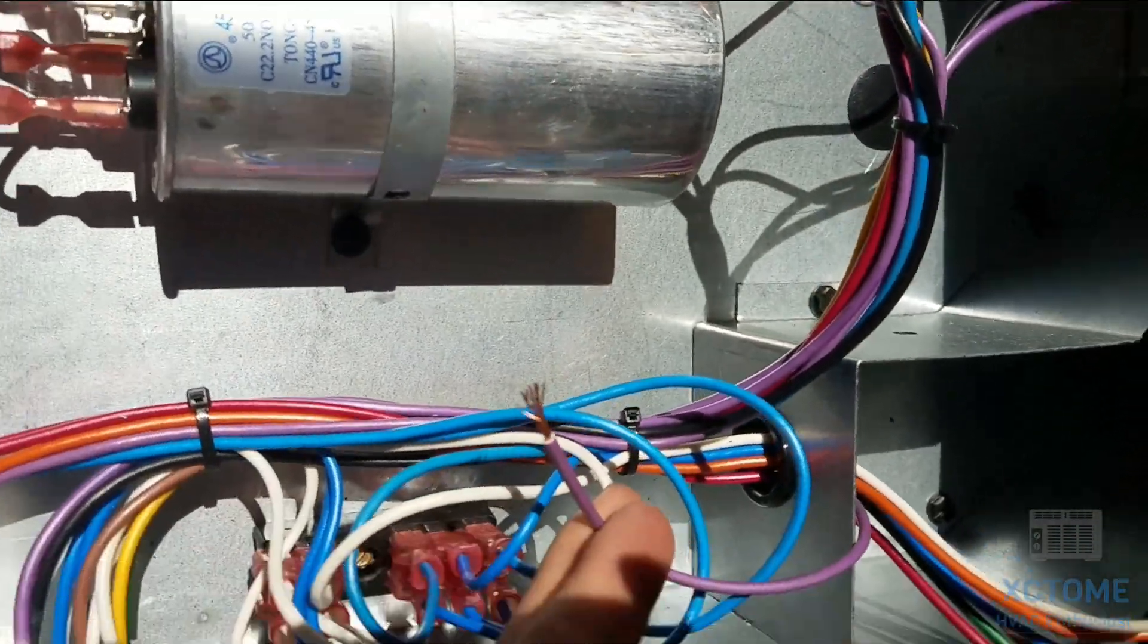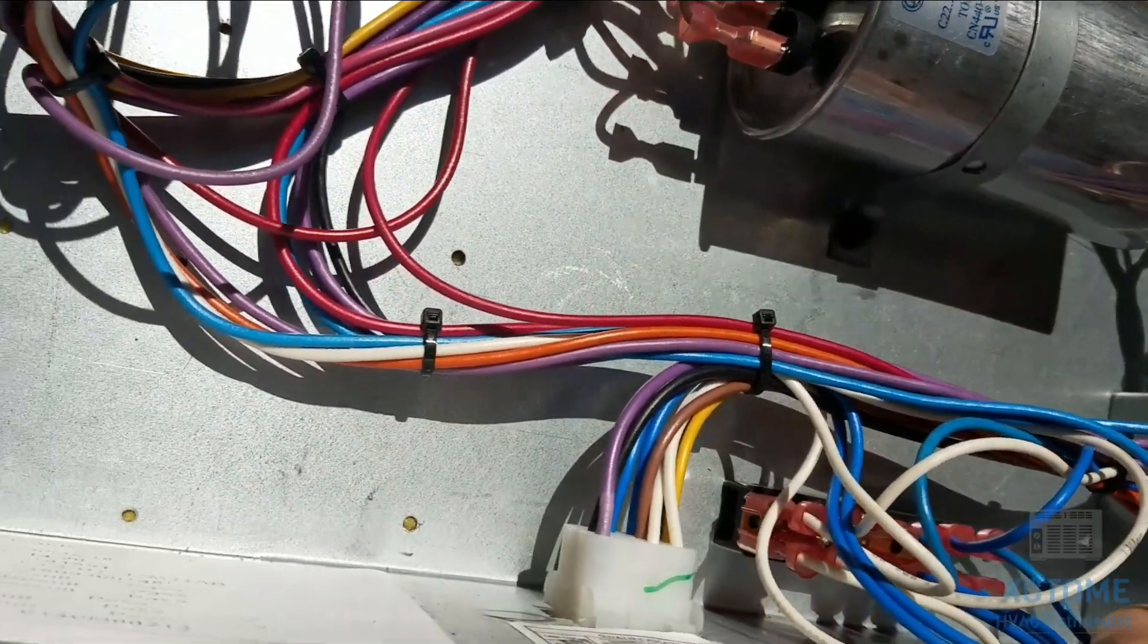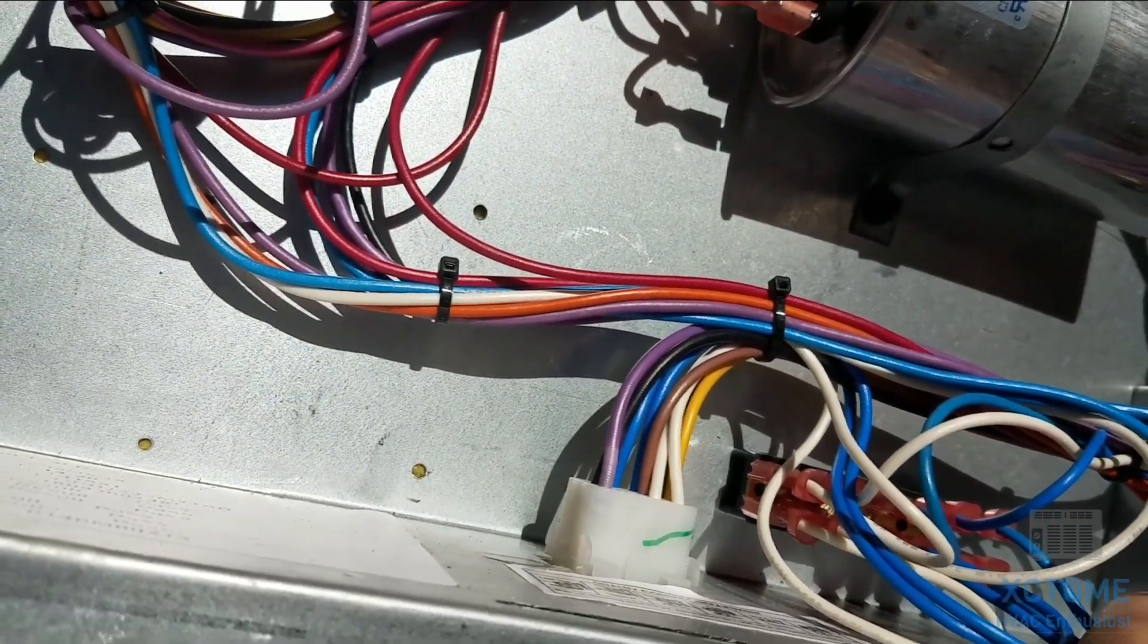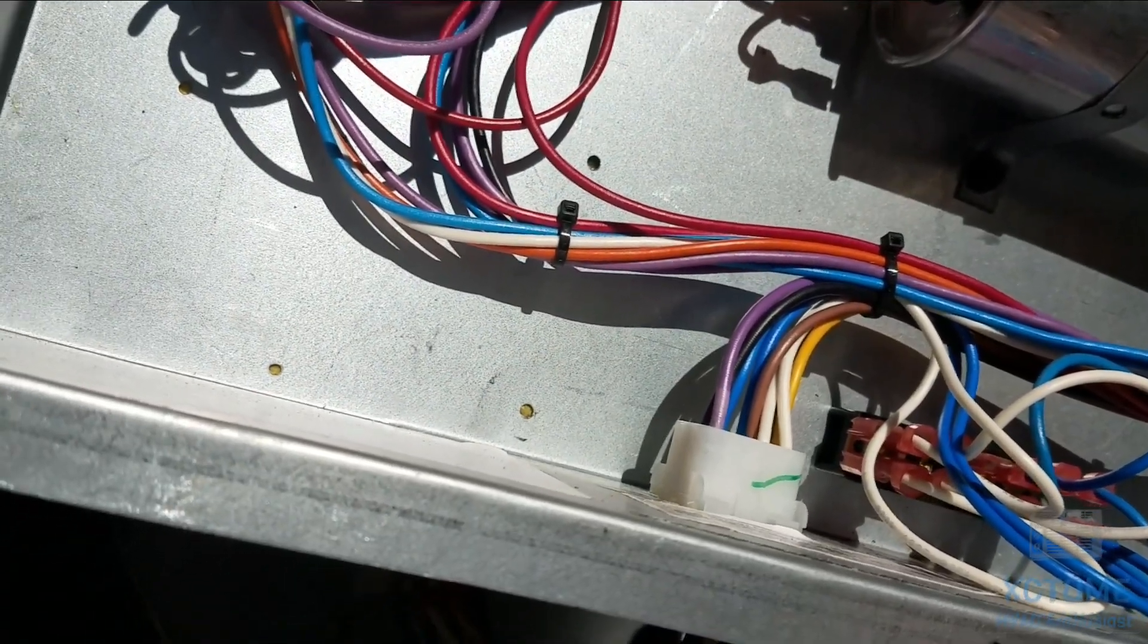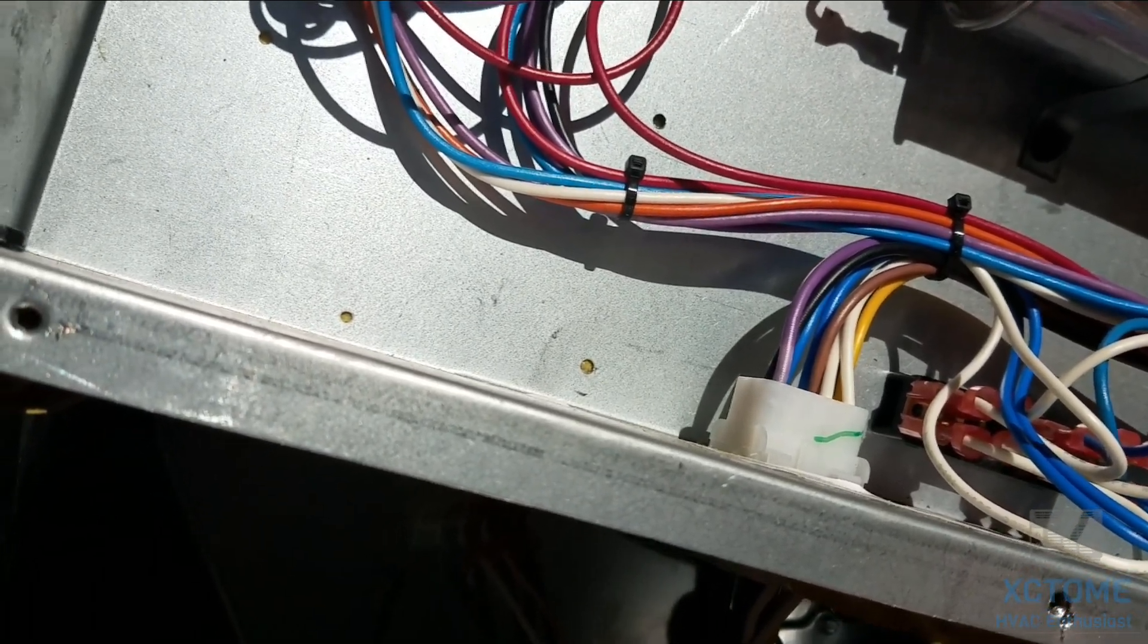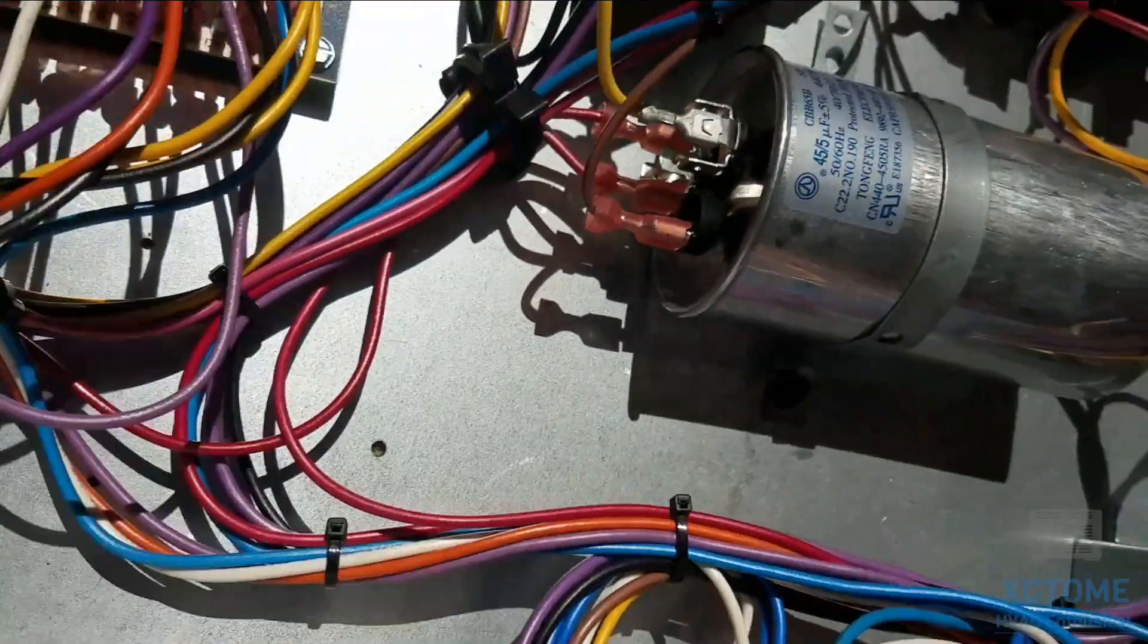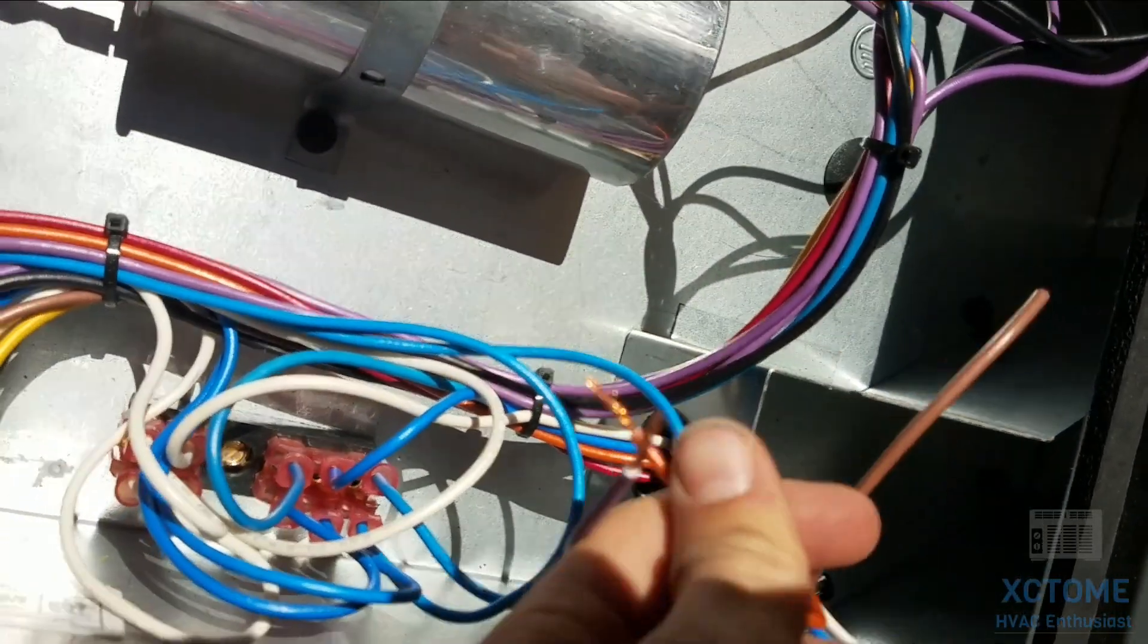This one here is a compressor wire. Yeah, a violet's compressor wire. And that says yellow which is... that's corresponding. Turn the lead. Yeah, and orange is reversing valve which is cooling active.